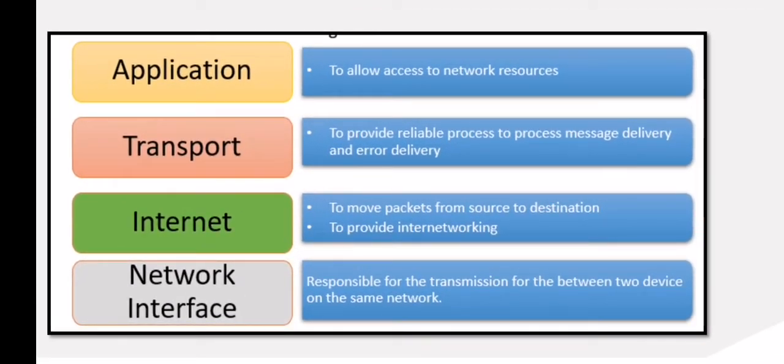The network interface layer helps you define details of how data should be sent using the network. This layer specifies how data can be physically transmitted through the network. This layer is also in charge of data transmission between two devices connected to the same network.